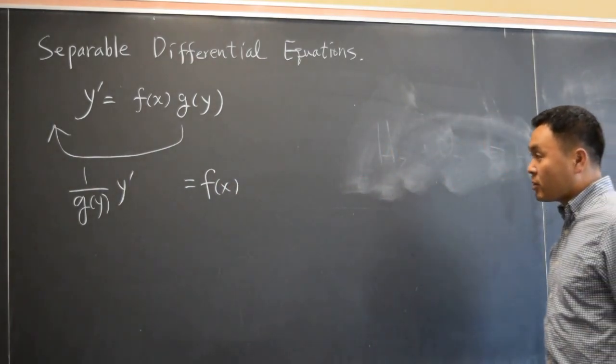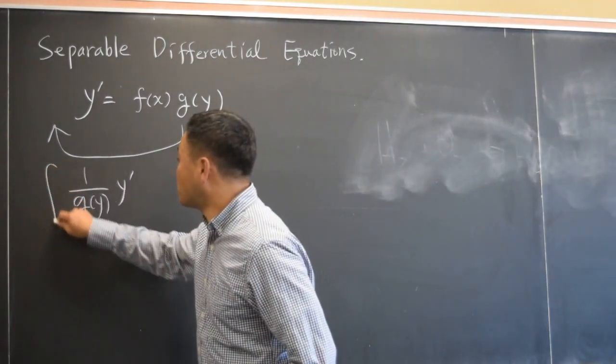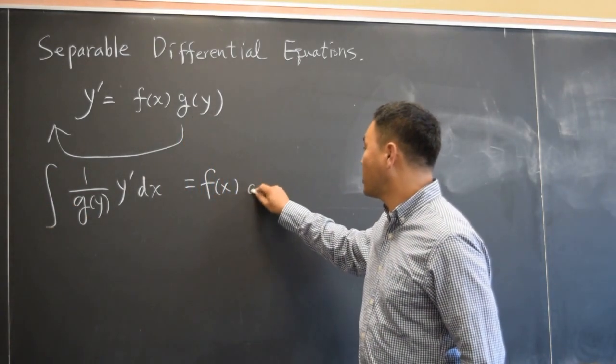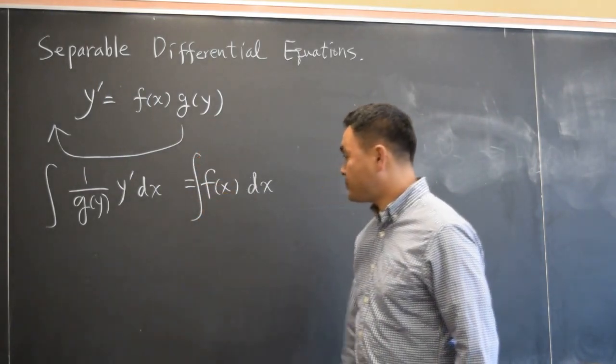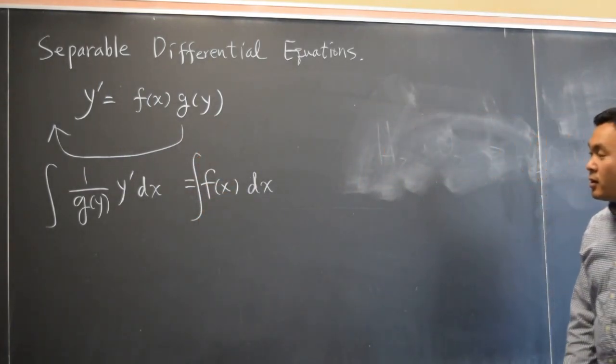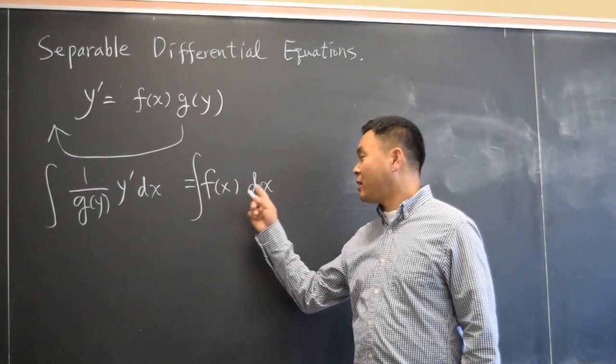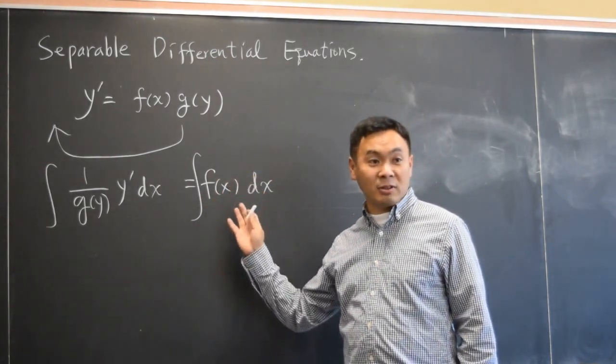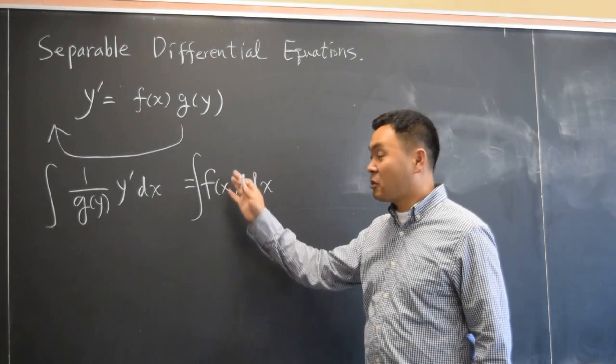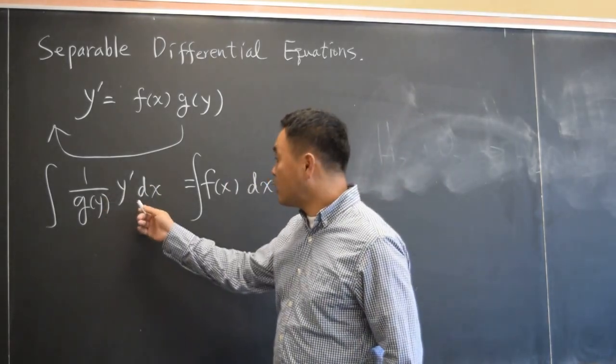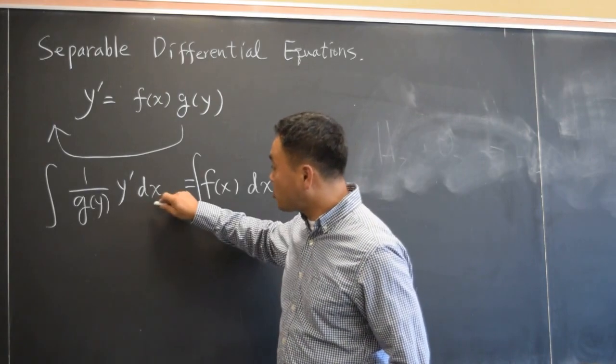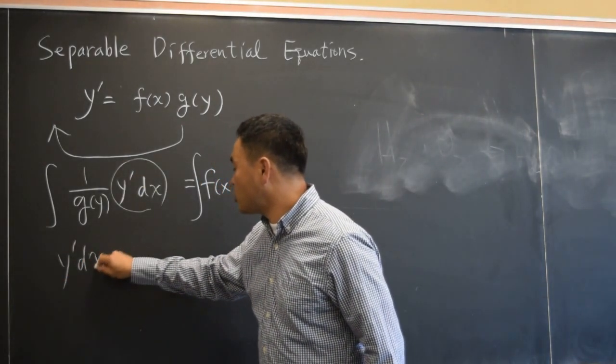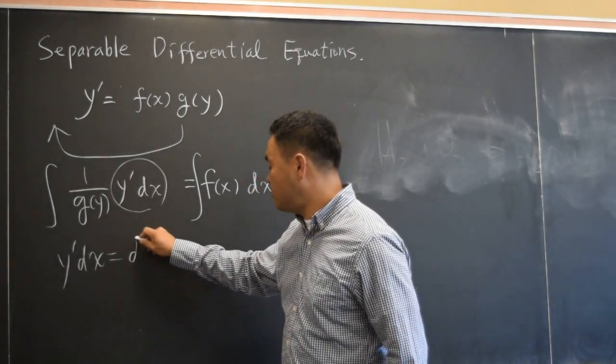And once you have that, then you can integrate both sides by dx. And since the right side is a function of x, if this is given explicitly, you should be able to integrate this. The left side, however, you should recognize that y prime dx is really dy.